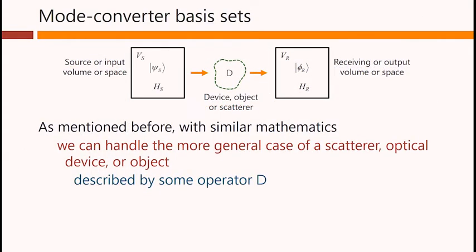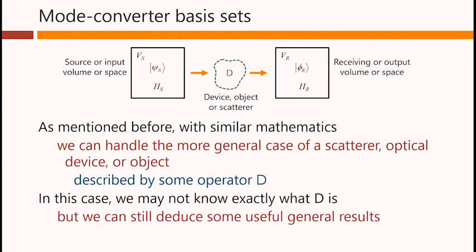As mentioned before, with similar mathematics we can handle the more general case of a scatterer or optical device or object, it could even be an optical fiber, that is described by some operator D in its relation between the source space and the receiving space. In this case, we may not know to start with exactly what D is, but we can still deduce some useful general results.